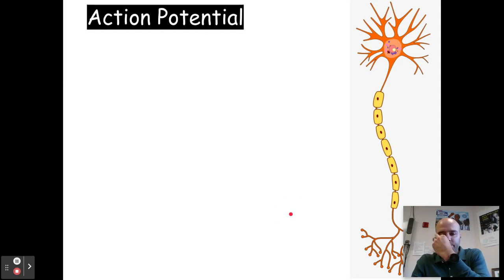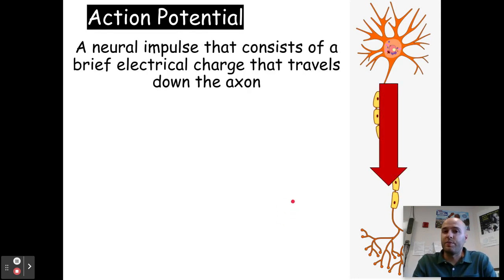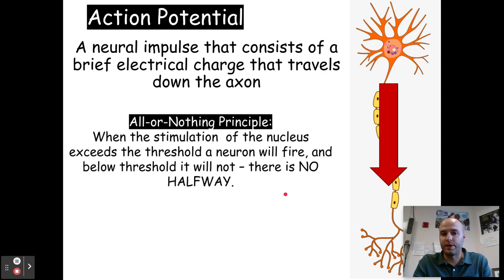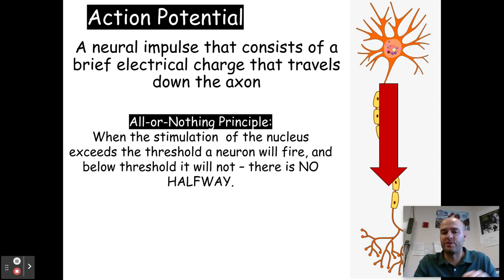That is called an action potential — a nerve impulse that consists of a brief electrical charge that travels down the axon, from the dendrites down the axon and eventually out the axon terminals. When an action potential occurs, a neuron fires with something called the all-or-nothing principle. When the stimulation exceeds the threshold, a neuron will fire; if it does not exceed the threshold, it will not. There is no half firing, no half measures — it either exceeds the threshold and fires, or it doesn't.